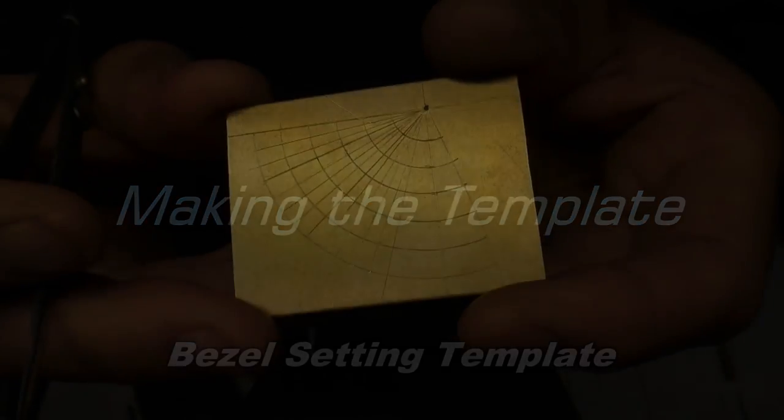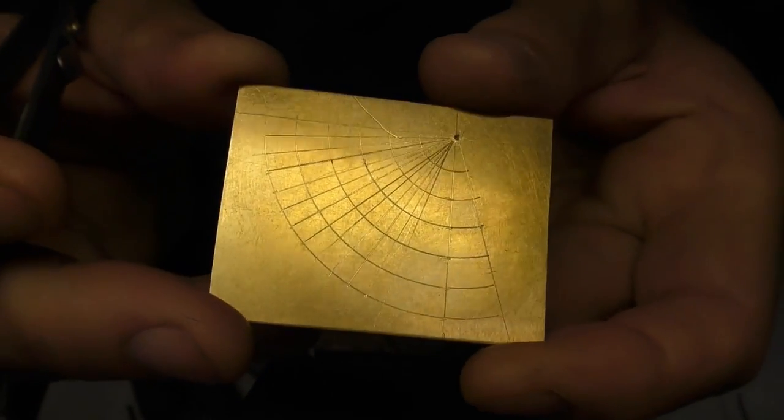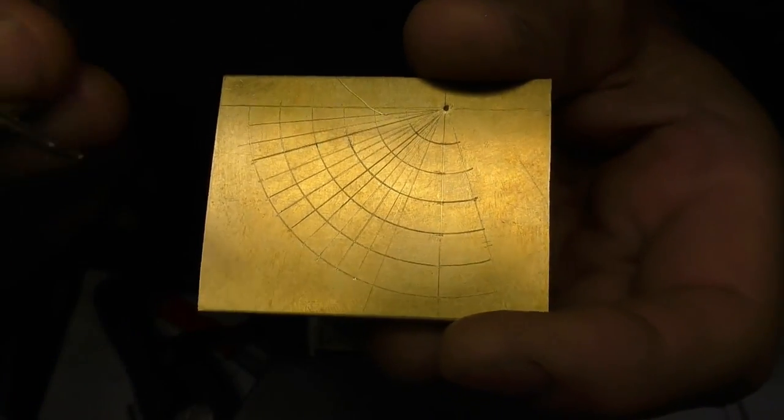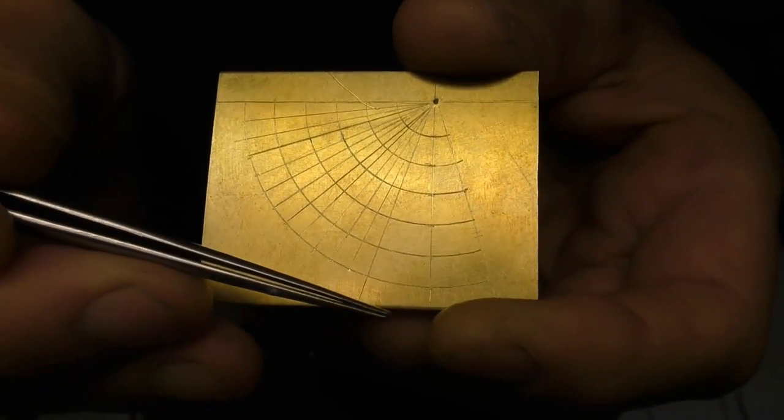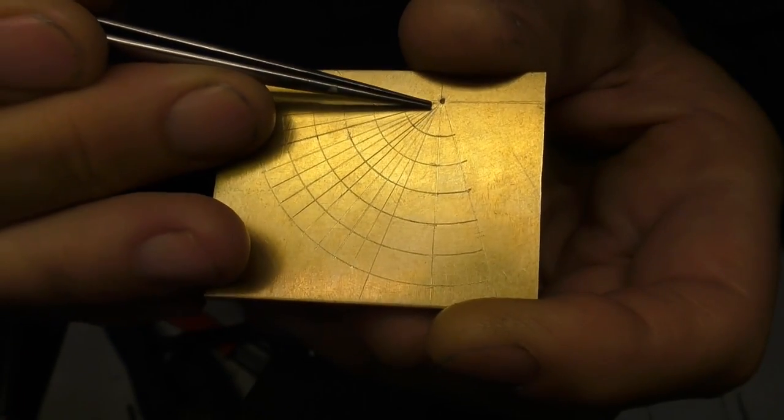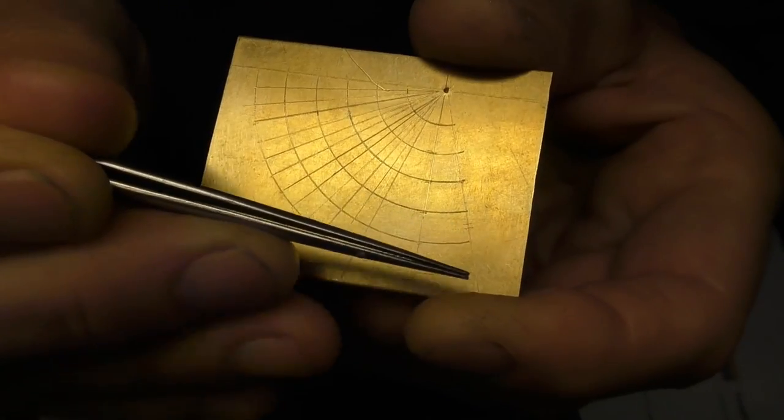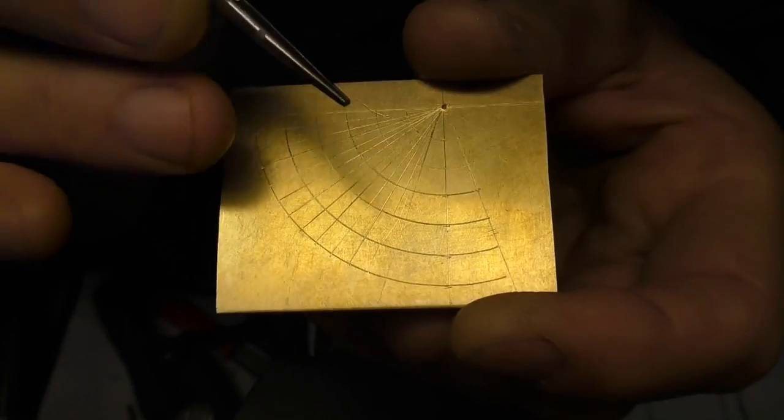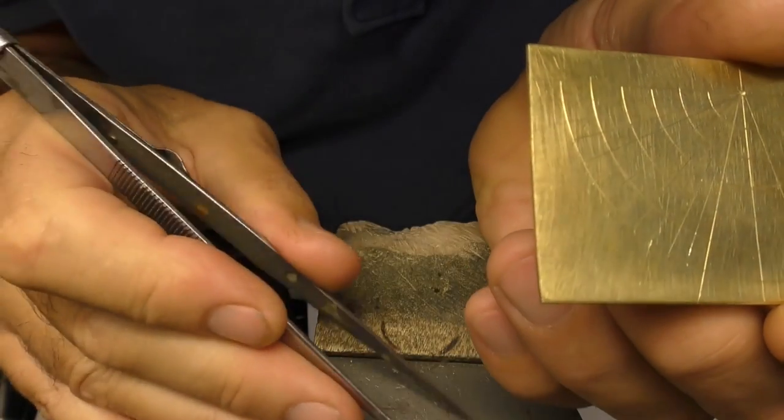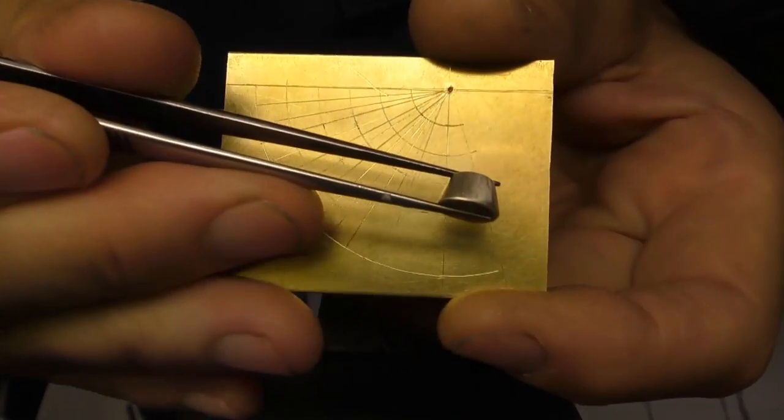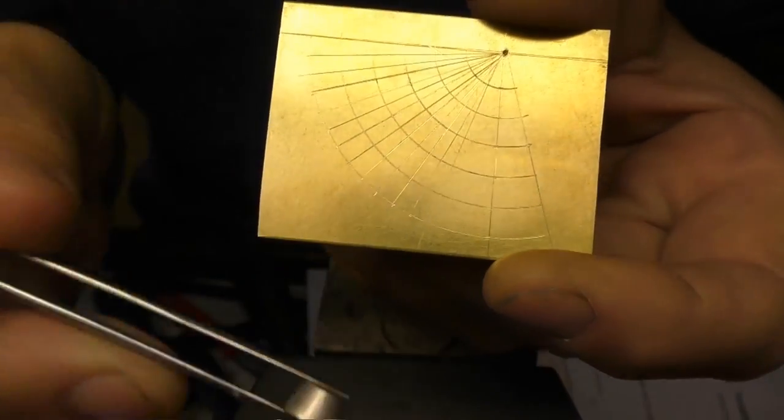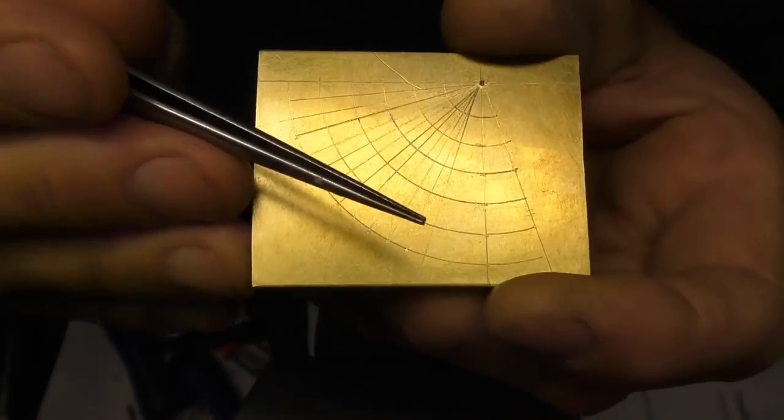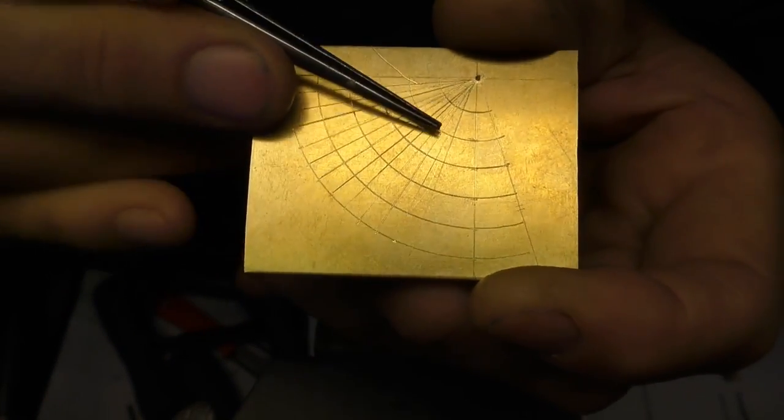I'm going to show you how to make this bezel setting template and this is made for a 17 degree setting. 17 degrees is determined by this square line here and these angle lines here. Most settings in the jewelry industry are that angle but if you wanted to make settings at 20 degrees which is a more open angle then you'd start the angle lines at 20 degrees.